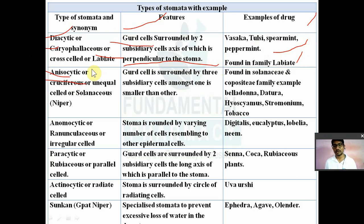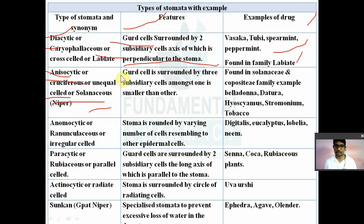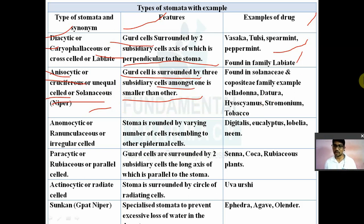The second type in the table is anisocytic stomata, also known as cruciferous stomata, unequal-celled stomata, or solanaceous stomata — because they are found in the Solanaceae family. In this type, guard cells are surrounded by three subsidiary cells, and one of the three cells is smaller than the others. Examples include belladonna, datura, hyoscyamus, and tobacco, belonging to the Solanaceae or Compositae family.